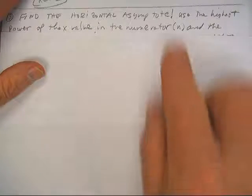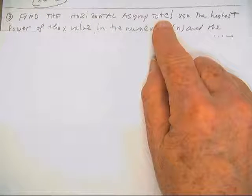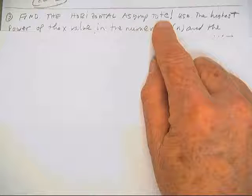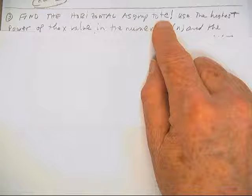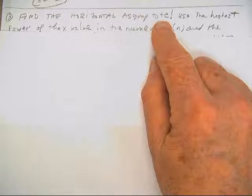Now we have to find the horizontal asymptote, singular. There won't be two of them. We can have more than one vertical asymptote. We might not have any, but we can have more than one. But on horizontals, we can only have one.